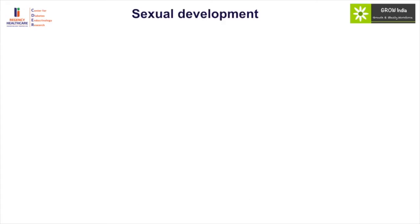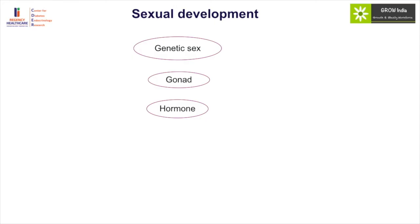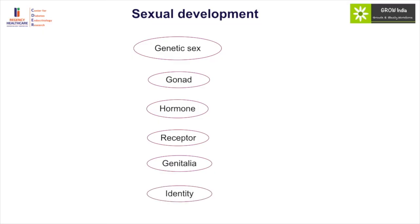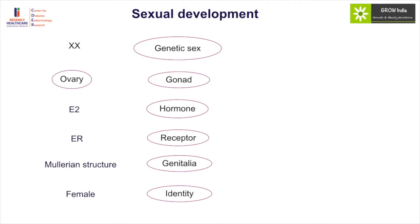The process of sexual development starts with the development of the genetic sex, followed by development of the gonad as per the genetic sex, development of hormones produced by the gonads, action of those hormones and receptors, and finally resulting in development of the internal and external genitalia and the formation of gender identity. In a girl, this will be an XX karyotype, with development of ovaries, production of estrogen acting on the estrogen receptor, causing sustenance of Müllerian structures and development of female gender identity.